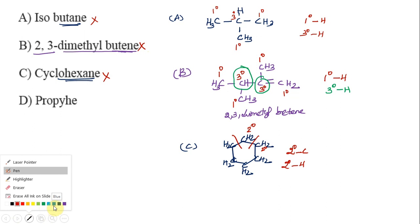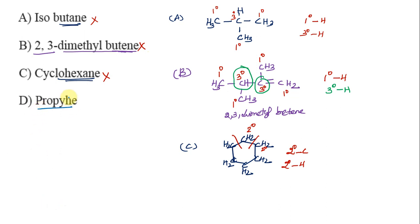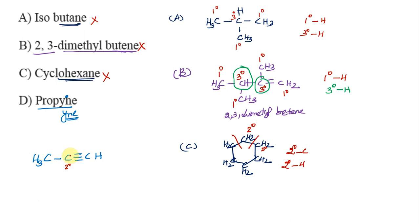Option D is propyne. Propyne has three carbons with a triple bond. Here there is H, and here is CH3. The CH3 end is a primary carbon — it has three hydrogens, making it primary carbon. Then there is the next carbon which is a secondary carbon with no hydrogen. So propyne has primary hydrogen.